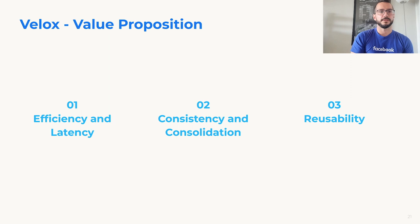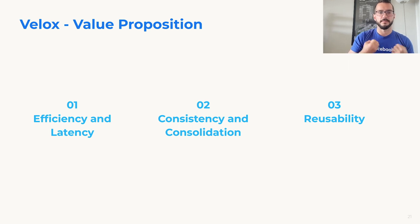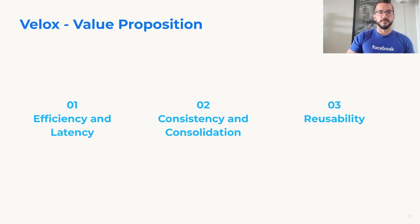Velox's value proposition is threefold. First is efficiency and latency — by implementing all those optimizations and consolidating in a single C++ library, we're seeing really good efficiency and latency wins. Second is consistency and consolidation — by integrating Velox in different engines, using the same library and providing the same set of functions and corner case behaviors, it helps provide users with a more consistent experience. Third is reusability — you don't need to fix bugs in all different engines, you can do that in a single place. Also, when developing new engines in the future, you don't need to build the execution engine from scratch; you can leverage the library that's already built.